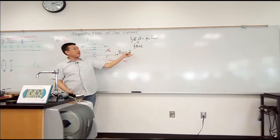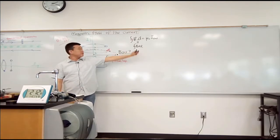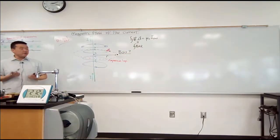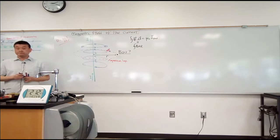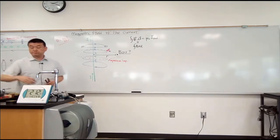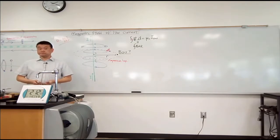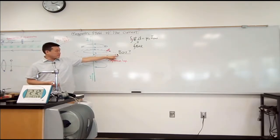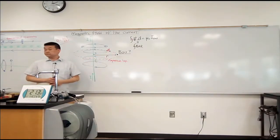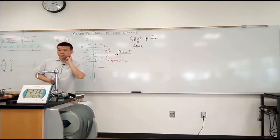All right, and now what I want to do is argue that the magnitude of magnetic field is constant over this loop. How can I, what do I use to make that argument? So how do I know that magnetic field at this point and magnetic field at this point have the same magnitude?